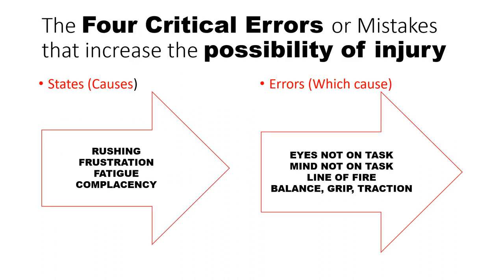The four critical errors or mistakes that increase the possibility of injury are rushing, frustration, fatigue, and complacency. Those errors cause eyes not on task, mind not on task, line of fire, and loss of balance, grip, and traction.